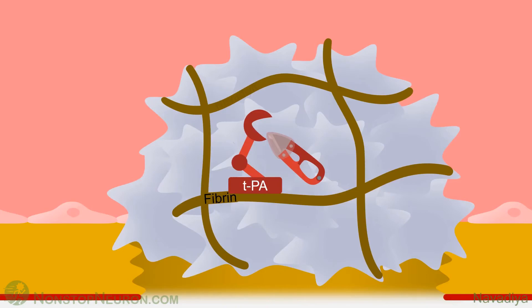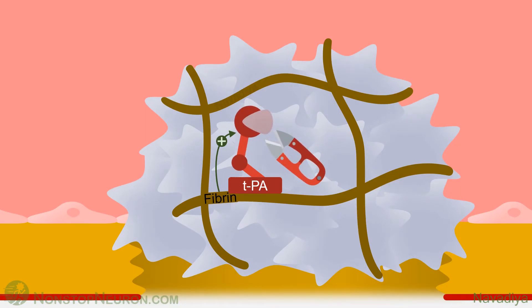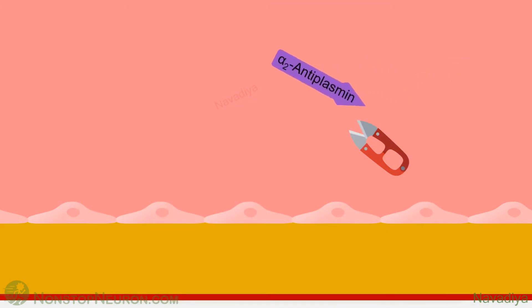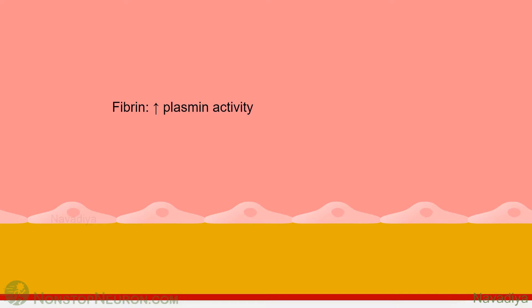Thus, plasmin activity is kept under control by plasminogen activator inhibitors and alpha-2 antiplasmin at healthy vessels. However, the story is different where clot is present. Here, tissue plasminogen activator binds with fibrin, which potentiates its catalytic activity. So in the presence of fibrin, tissue plasminogen activator can easily activate plasmin. Also, the plasmin thus formed is safe from the inhibitory effect of antiplasmin, because the binding site for fibrin and antiplasmin is the same. So when plasmin is doing its job of breaking fibrin strands, antiplasmin cannot inhibit it. Once the fibrin mesh is broken and the clot is dissolved, antiplasmin inhibits plasmin and terminates its action. In short, the presence of fibrin increases plasmin activity, and in absence of fibrin, plasmin activity is minimal.